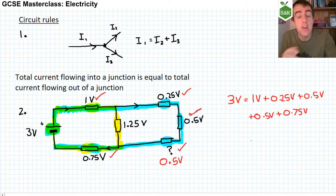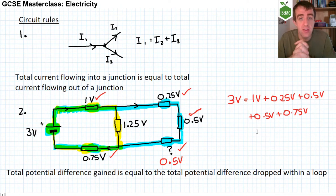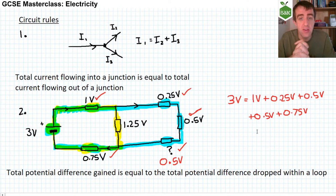One of the consequences of this rule is that the potential difference of two components in parallel must always be the same. How potential differences are shared between components in series depends on the resistance of those series components, and we have the equations from before to calculate what those potential differences are.